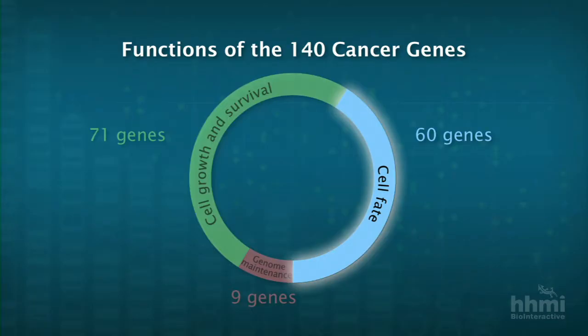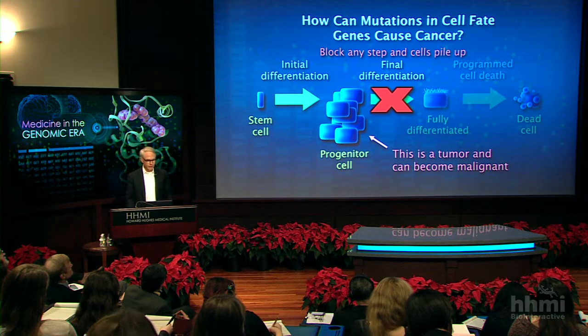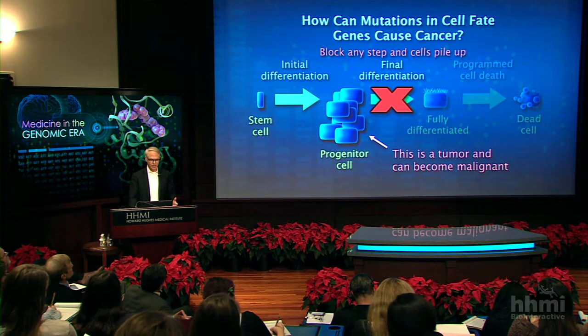The third category — 60 genes as of this update — I've called cell fate. What do I mean by cell fate? I'm talking about the process by which a stem cell from a tissue differentiates, gives birth to progeny — progenitor cells — which then further differentiate into mature cells of whatever tissue that is. Eventually, those mature, fully differentiated cells tend to die.